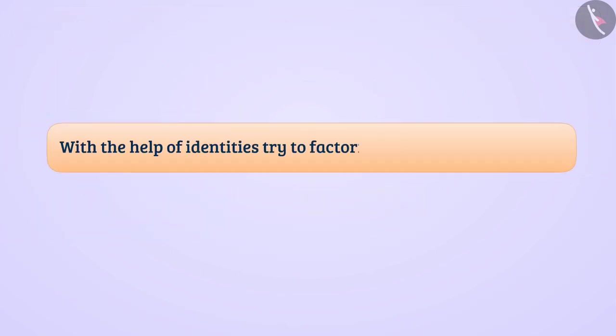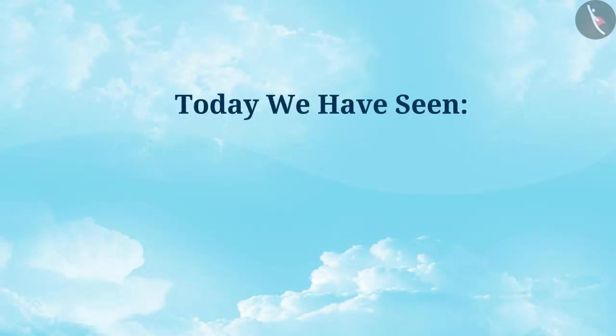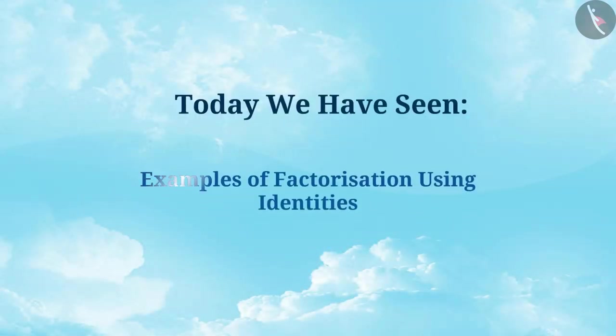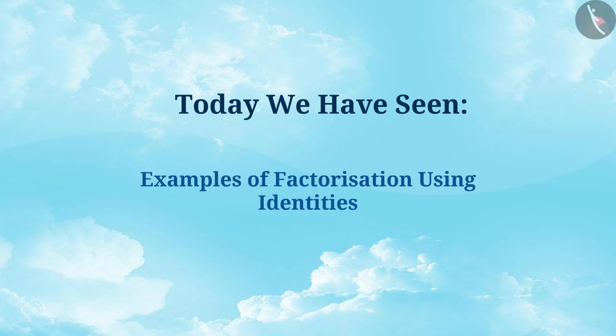Now, with the help of identities, try to factorize 121k square minus 64 by yourself. Today we have seen examples of factorization using identities. In the next video, we will see some mistakes related to them.